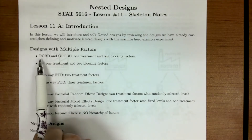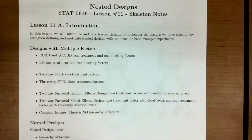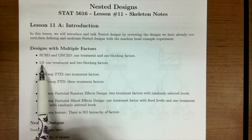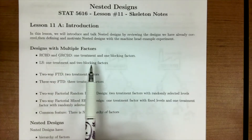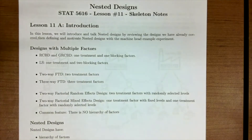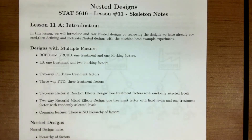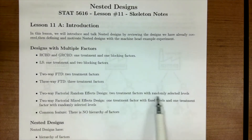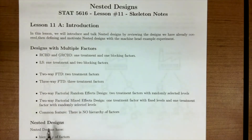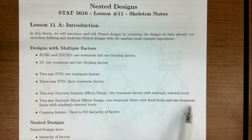So far we've talked about some block designs where we had one treatment and one block. Then we went and talked about the Latin square designs which have two blocks. We then extended our designs to have multiple treatment factors for the full factorial two-way and three-way. Then last week, we introduced the new idea of random effects and mixed effects. In a two-way random effects design, we have two treatment factors that are randomly selected from their given factors. And then we had a mixed effect that had one treatment factor as a fixed effect and one treatment factor as a random effect.